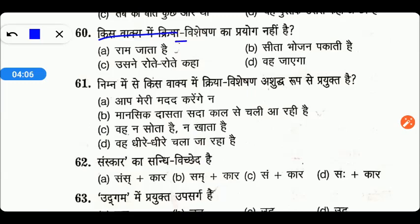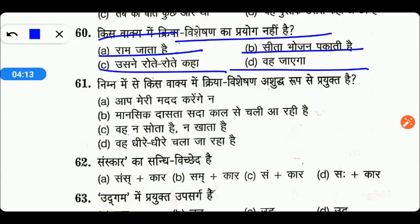किस वाक्य में क्रिया विशेषण का प्रयोग नहीं हुआ: राम जाता है, सीता भोजन पकाती है, उसने रोते रोते कहा, या फिर वह जाएगा। तो friends यहाँ पर option A right होगा — राम जाता है। इसमें क्रिया विशेषण का प्रयोग नहीं हुआ।